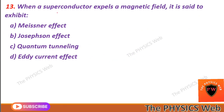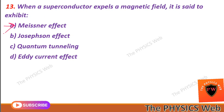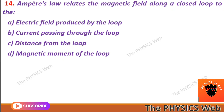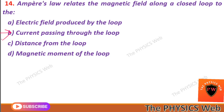Next, question thirteen: when a superconductor expels a magnetic field, it is said to exhibit the Meissner effect. So A is your correct option. Question fourteen: Ampere's law relates the magnetic field along a closed loop to the current passing through the loop. So B is your correct option.